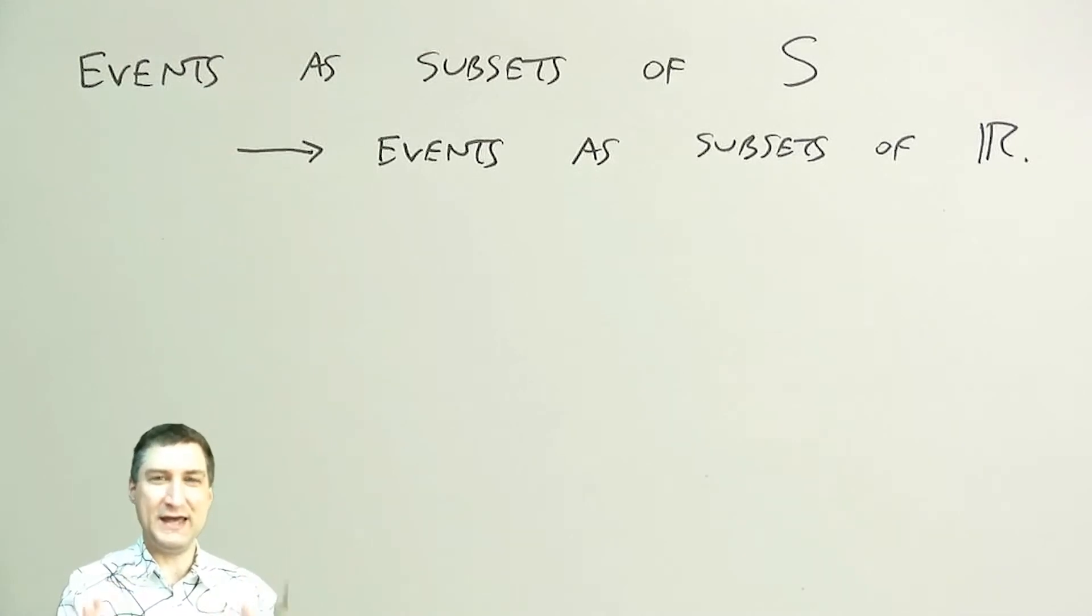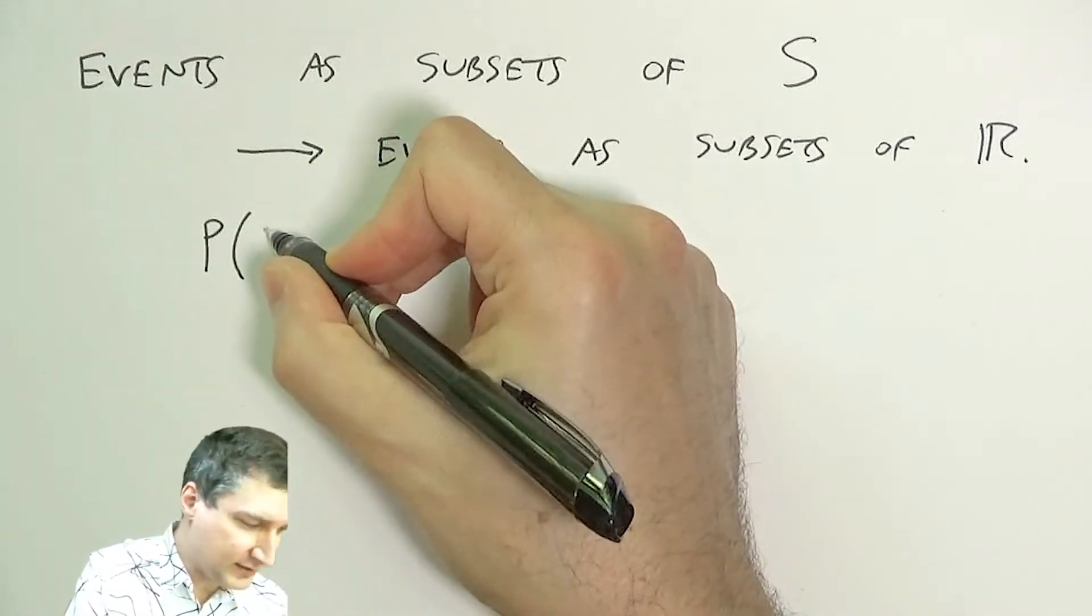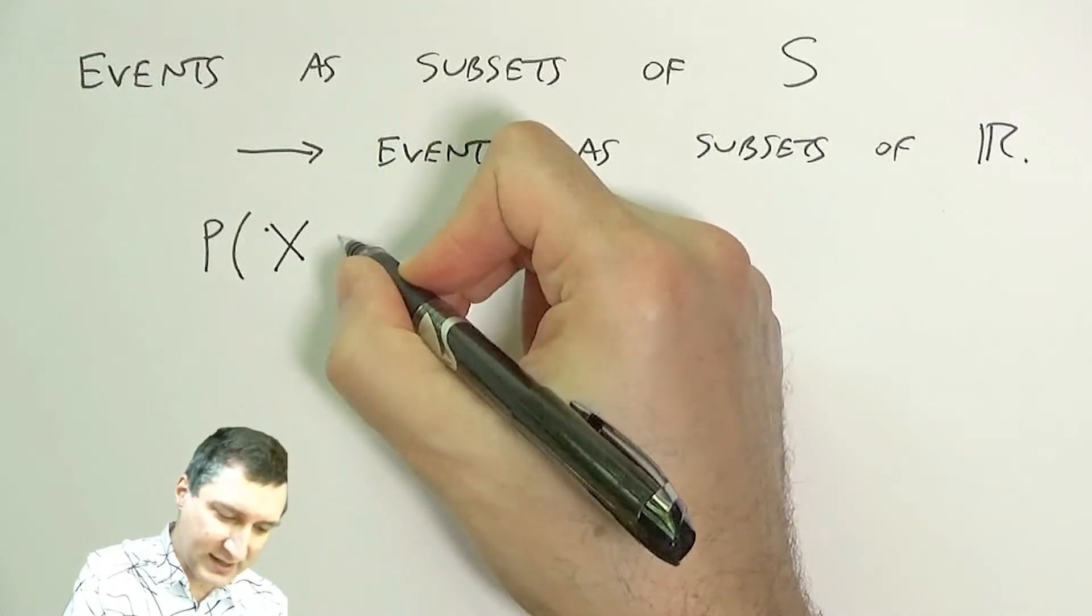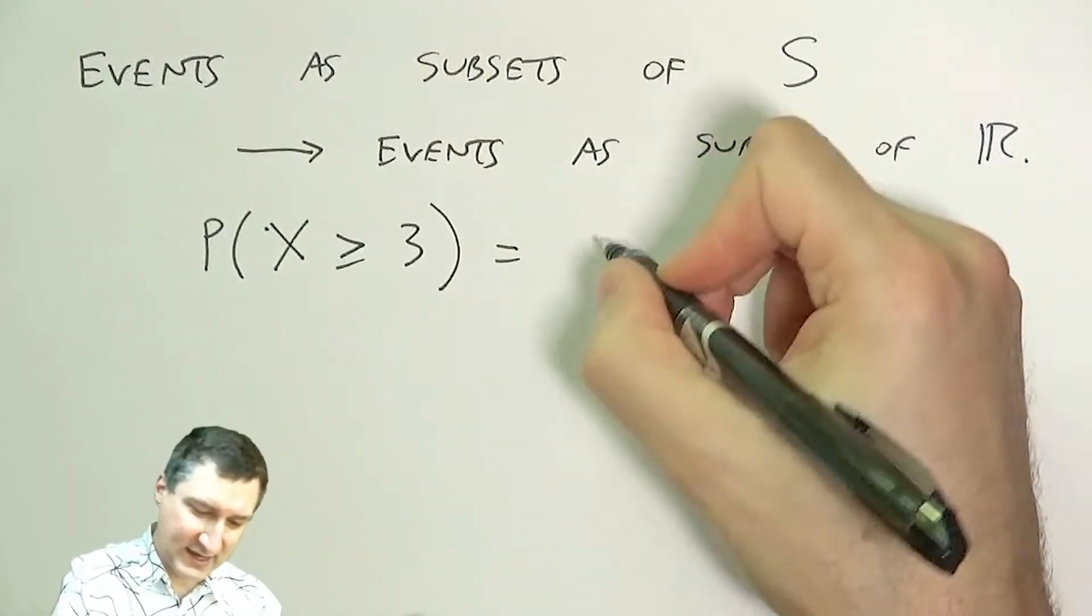Right, so I could ask, for example—and this is like being really pedantic—I could say what's the probability that the random variable X was greater than or equal to 3?